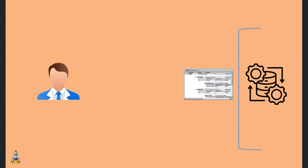Let's say a user submits a request for the application engine program and the program is currently executing. All the processing happens behind the scenes, meaning the user does not have any visibility into what is happening inside the application engine program. Once the program completes, a user can see whether it was successful or has failed. If we have a requirement that the program should convey some information to the user about execution, we can do that with the help of log messages.